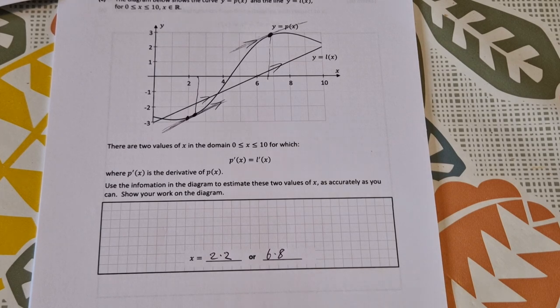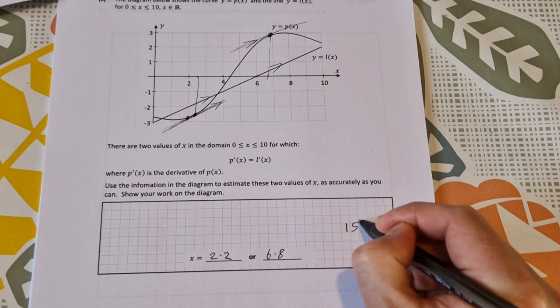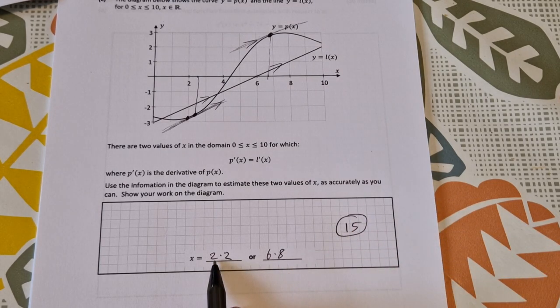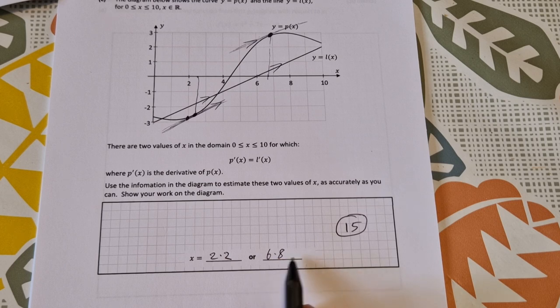If you're fairly close, I would imagine 2.1 or even 2 to 2.4 are probably acceptable, and probably 6.6 to 7 are acceptable, but I'm not sure because it doesn't say in the marking scheme.